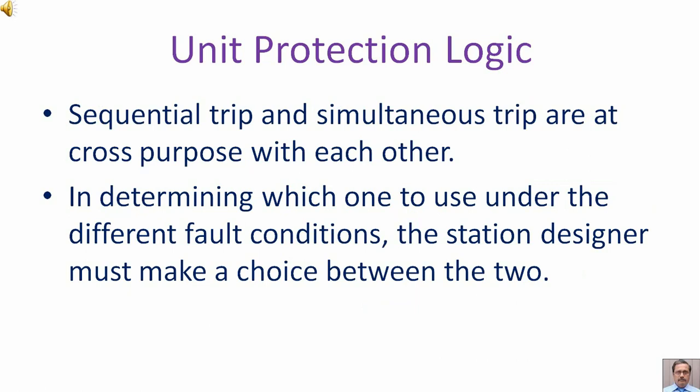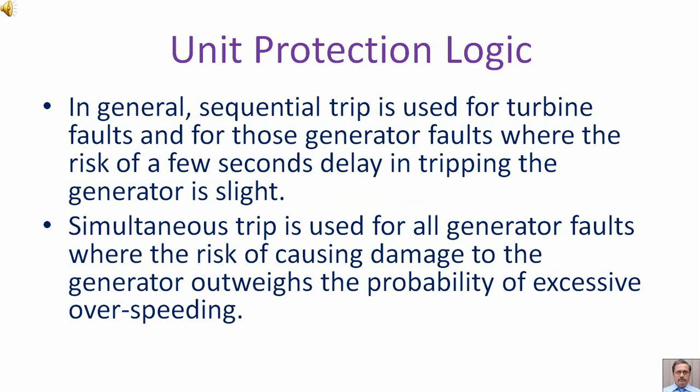Sequential trip and simultaneous trip are at cross purposes with each other. In determining which to use under different fault conditions, the station designer must make a choice between the two. In general, sequential trip is used for turbine faults and for those generator faults where the risk of a few seconds' delay in tripping the generator is slight. Simultaneous trip is used for all generator faults where the risk of causing damage to the generator outweighs the probability of excessive overspeed.